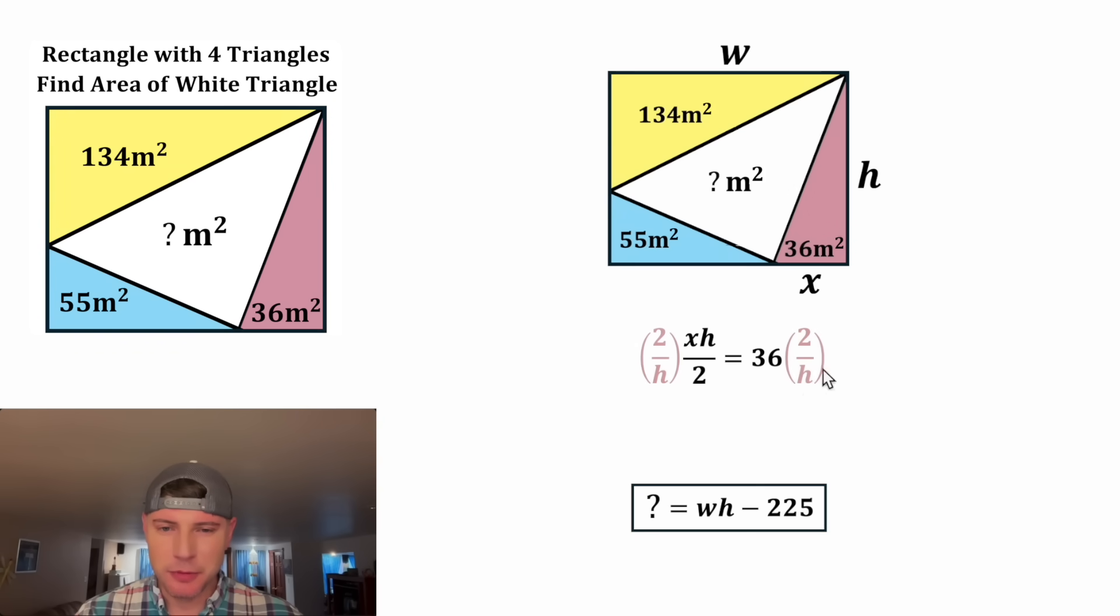And then to get the X all by itself, we'll multiply both sides by two over H. On the left-hand side, we'll be left with X because the twos will cancel and the Hs will cancel. And on the right-hand side, the 36 will multiply by the two to give us 72 over H. And now we have the value for this distance X. Let's change it into 72 over H.